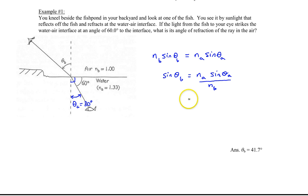That is 1.33 for the index of refraction of water, sine of 30 degrees, divided by 1.00.